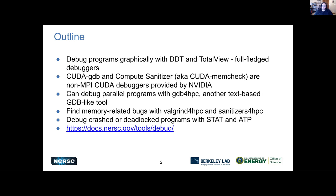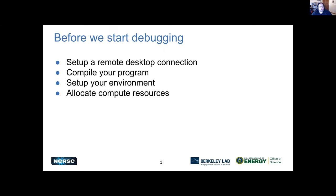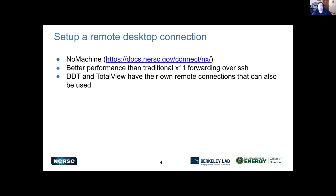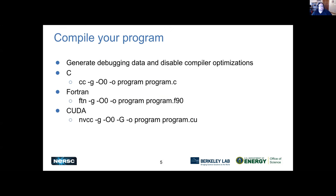STAT and ATP work by analyzing where your program is according to its backtrace, merging the backtraces, and showing you where your program is going. Before you start debugging, there are a few things you'll want to do. You don't want to set up a remote connection using X11 forwarding — use NoMachine instead for better performance, although both DDT and TotalView have their own options. You need to compile your program with debugging data and disable compiler optimizations. The options for C and Fortran are -g and -O0, and for CUDA the host options are -g and -O0, while -G (capital G) enables device debugging information.